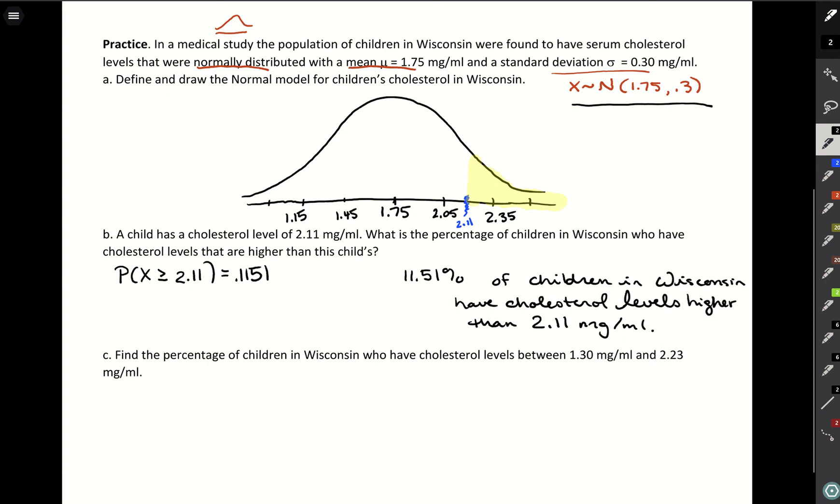Then this last question says find the percentage of children in Wisconsin who have cholesterol levels between 1.3 and 2.23. Going to our picture, 1.3 is about here, 2.23 is maybe about here. We want to find this area in between. This should be a fairly big probability. It's covering a large section of our graph. Probability with a lower bound of 1.3 up to 2.23 on our curve.